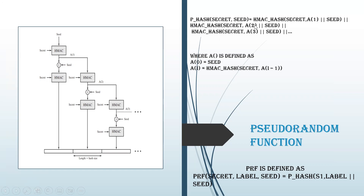You should understand what A(0), A(1), A(2) represent. A(0) is the seed. A(1) is the HMAC of the seed using the secret key, and each subsequent iteration builds on the previous one. HMAC outputs are concatenated through the first, second, third iterations and so on, until the complete block length of the message is satisfied.